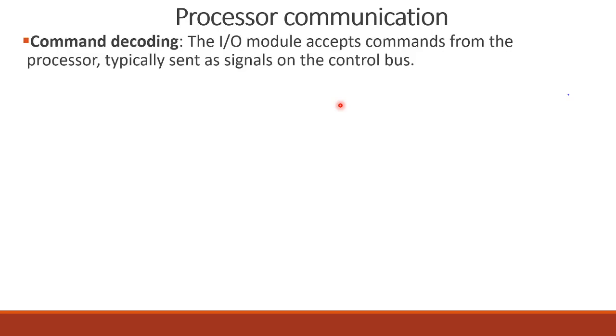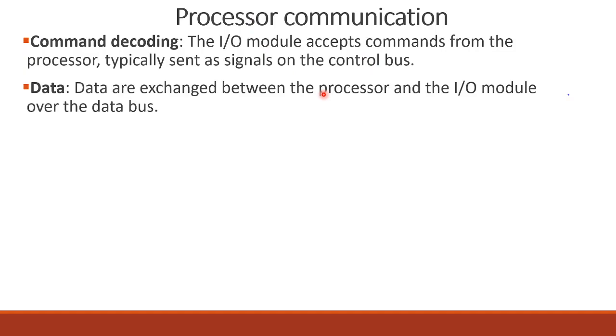For status, we check whether the input or output device is ready. We can communicate using status. There are more communication possibilities for the processor. One important function is command decoding — the peripheral device needs to know the command from the processor, such as write, read, etc. The IO module accepts commands from the processor, typically sent as signals on the control bus.